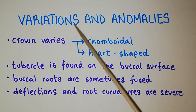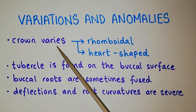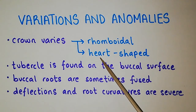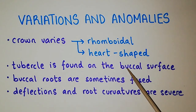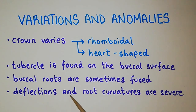Coming to the variations and anomalies, the crown varies in shape — it is either rhomboidal or heart-shaped. Sometimes there is a tubercle found on the buccal surface. The buccal roots are sometimes fused. Deflections and root curvatures are sometimes severe.